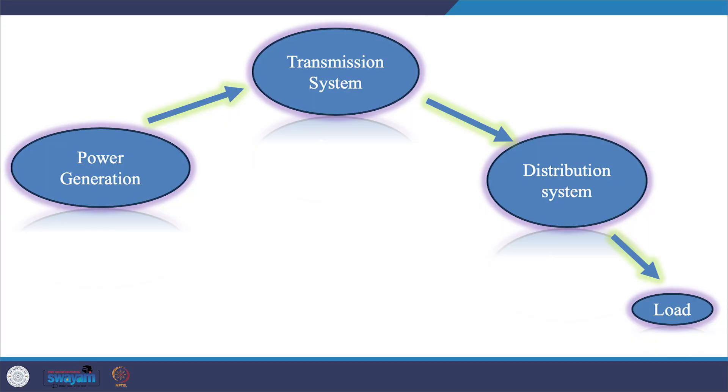Essentially, when I talk about any transmission network, we usually solve it by assuming that it is essentially a balanced network. But actually, with the increasing introduction of renewable sources, electric traction loads, as well as electric vehicle loads, our distribution system is increasingly getting unbalanced, which in turn makes our power transmission system also unbalanced.